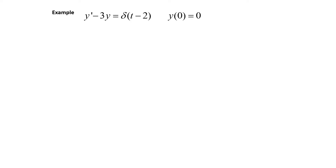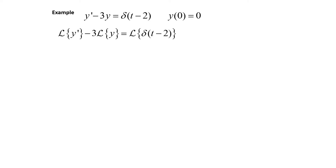Now let's solve some initial value problems that involve the Dirac delta function. For our first example, we have y prime minus 3y equals the Dirac delta function of t minus 2. Just like when solving initial value problems with Laplace transforms, we're going to start by taking the Laplace transform of everything. So the Laplace transform of y prime minus 3 times the Laplace transform of y will equal the Laplace transform of delta of t minus 2.